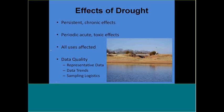One of the things I want to point out later in my presentation is how all uses are affected. We tend to think of drought sometimes in terms of ecology, but all uses — public water supply, recreational uses, and agricultural uses — become affected by a drought.